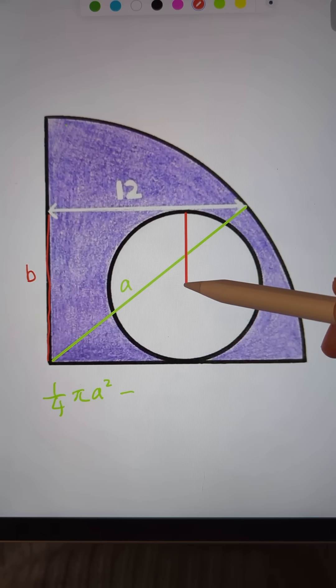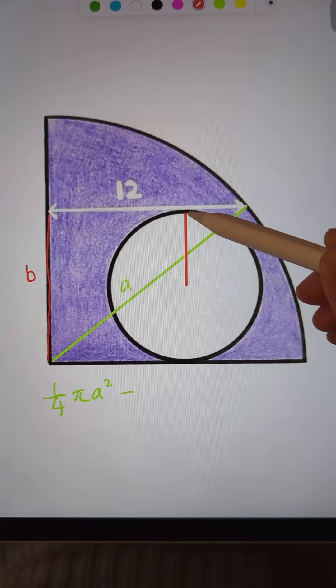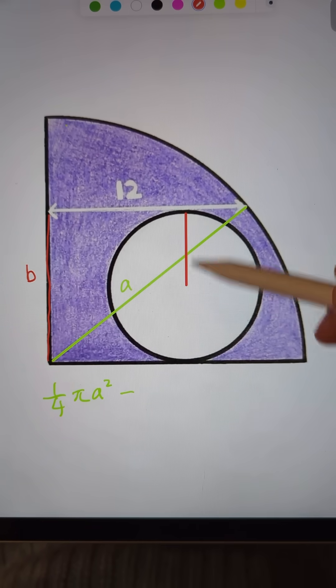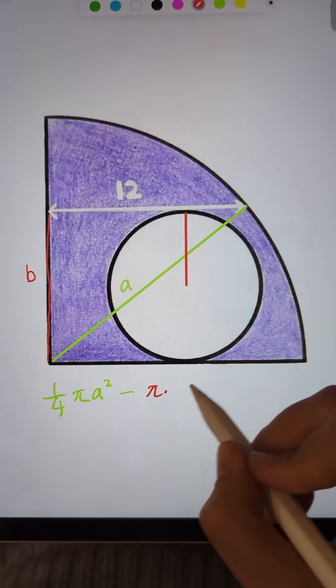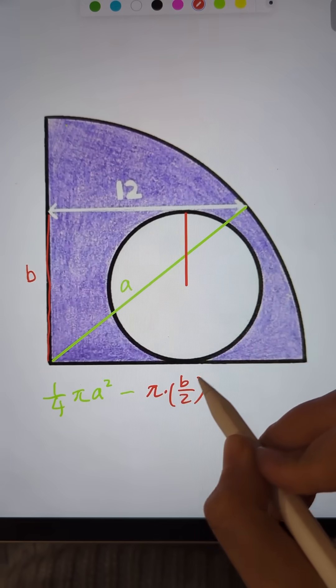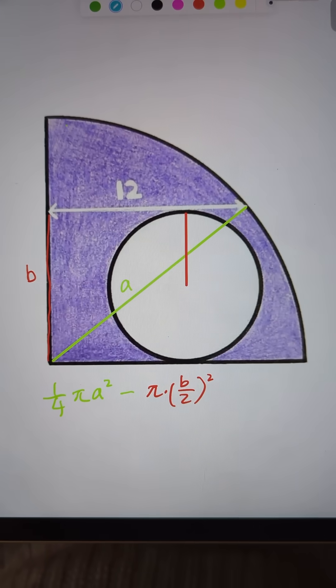Do you recognize b is actually twice the radius of the smaller disc? So what's the area of the smaller disc is pi b over 2 squared. All right, let's just simplify.